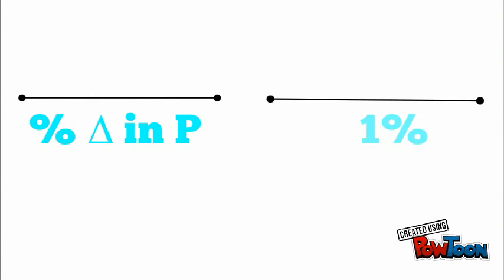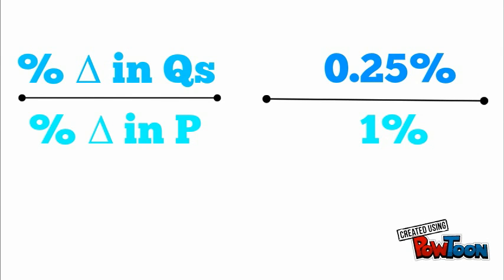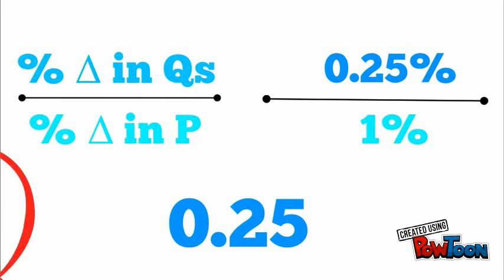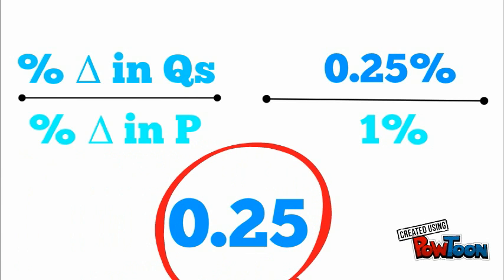So the percent change in price is 1, and the percent change in quantity supplied is 0.25, which gives us 0.25, and that is the Price Elasticity of Supply.